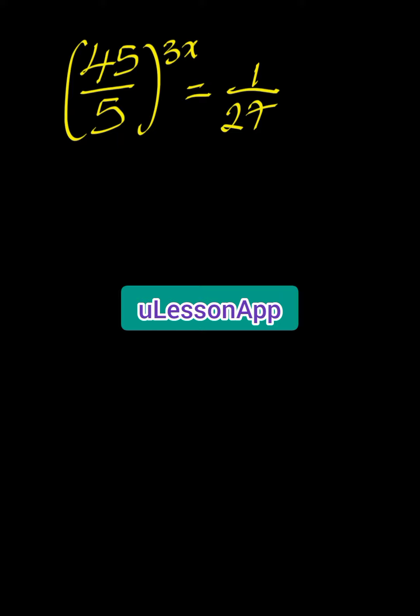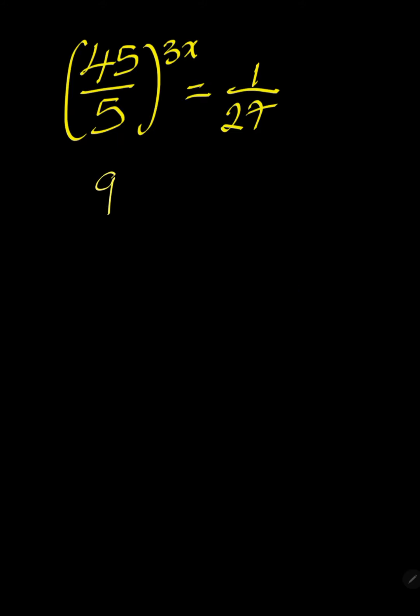Now remember that 45 over 5 is the same thing as 9. Then we have 9 to the power of 3x is equal to 1 over 3 power 3, because 3 power 3 will give us 27.